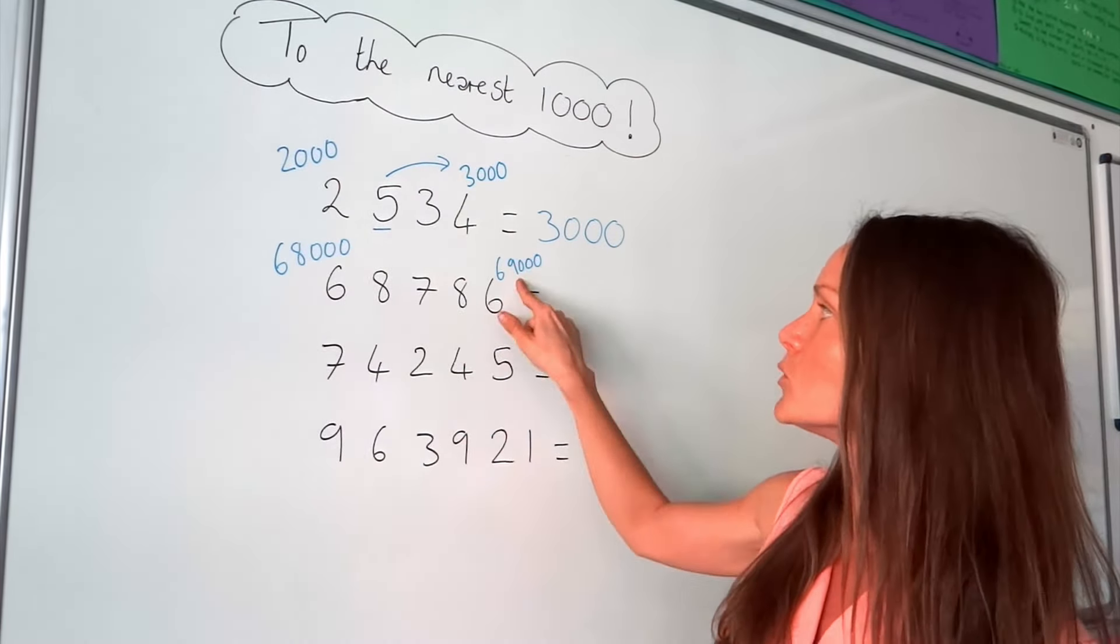All right, on to the next one. I'm going to use the same method. I'm going to write down the two multiples of 1,000, starting with the smaller one here. So the bigger one is 75,000.